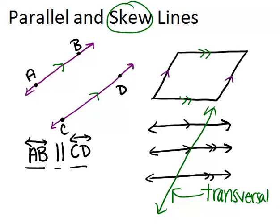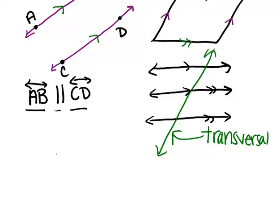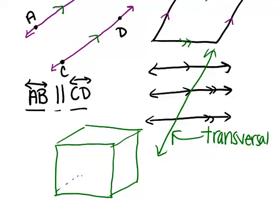So to think about skew lines, we're going to think about a cube, because a cube lets us think about different planes. In a cube, each face represents a different plane.